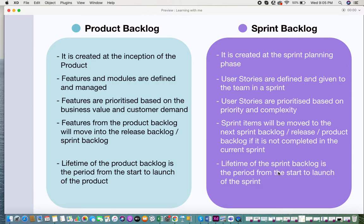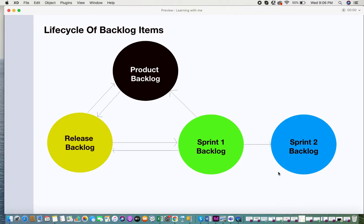The lifetime of your product backlog spans from the start to the launch of your product — you maintain the product backlog throughout that entire period. The lifetime of your sprint backlog is from the start to the completion of your sprint. At a high level, you have your product backlog, release backlog, and sprint backlog all working together.